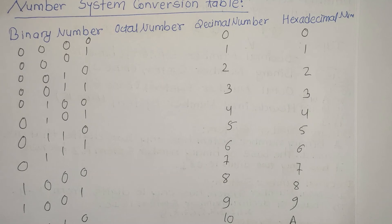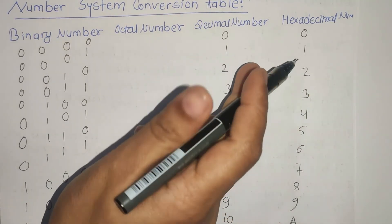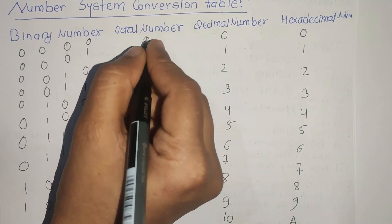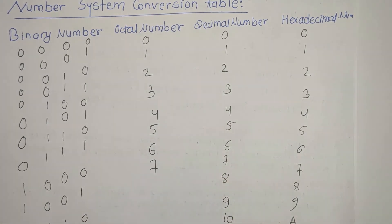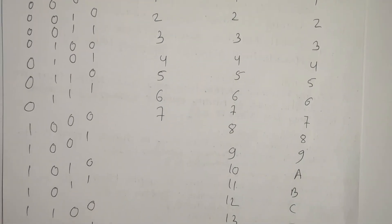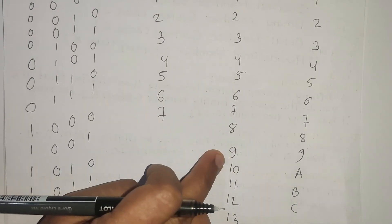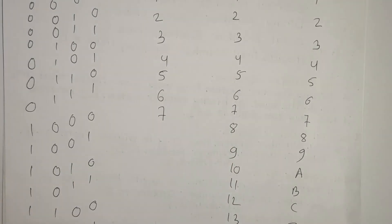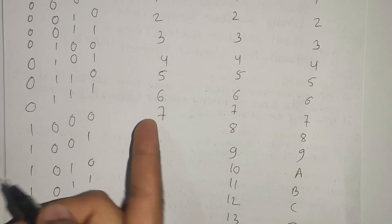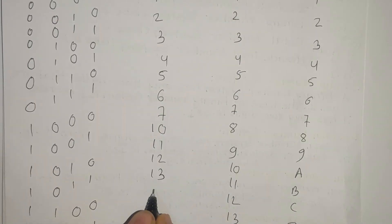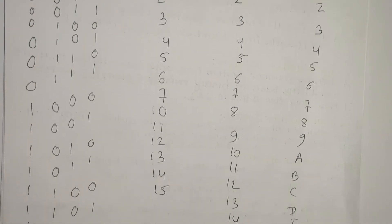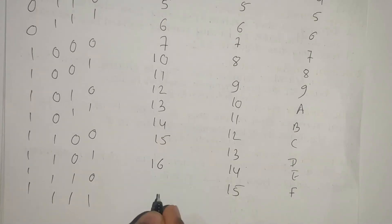In decimal it represents the decimal values. In the case of octal, the digits are 0, 1, 2, 3, 4, 5, 6, 7. After 7, what does octal do? It represents 8 and 9 in octal as 10 and 11, then 12, 13, 14, 15, 16, 17.